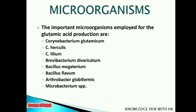There are many microorganisms employed for glutamic acid production, including Corynebacterium glutamicum, Corynebacterium hercules, Corynebacterium lilium, Brevibacterium divaricatum, Bacillus megaterium, Bacillus flavum, Arthrobacter globiformis, and Microbacterium species. All these organisms share certain morphological and physiological characteristics comparable to Corynebacterium glutamicum.